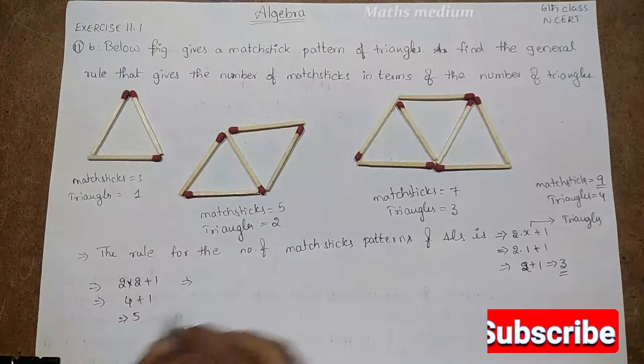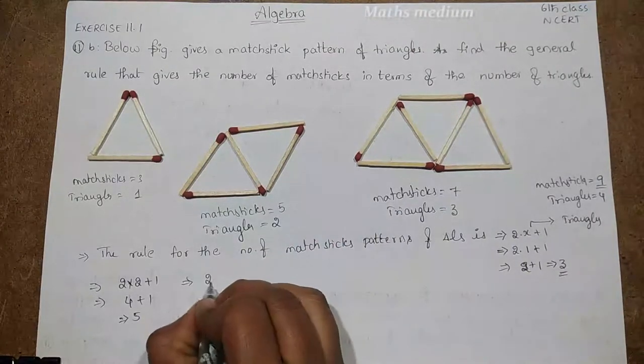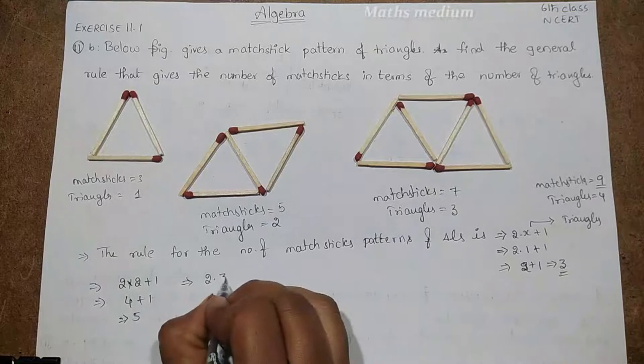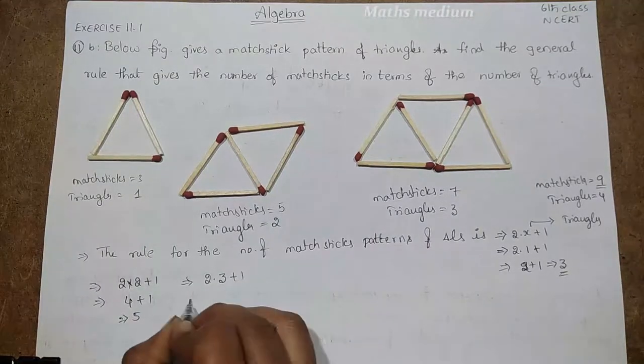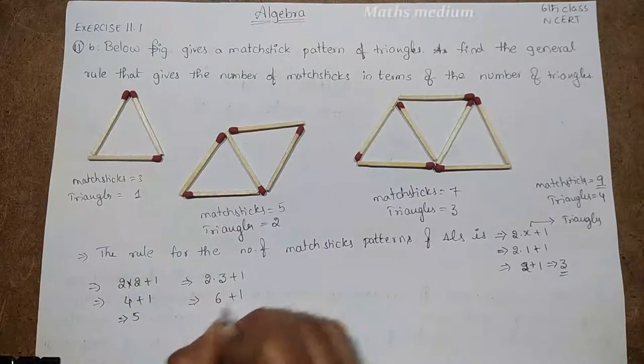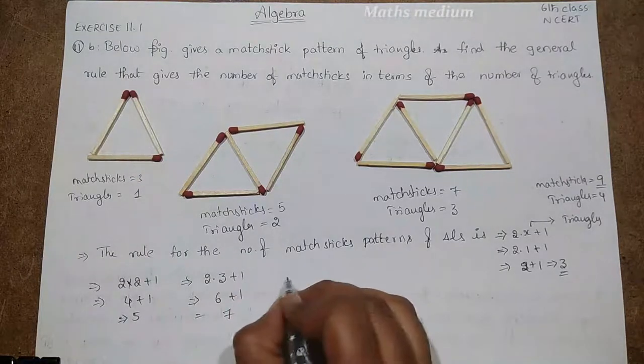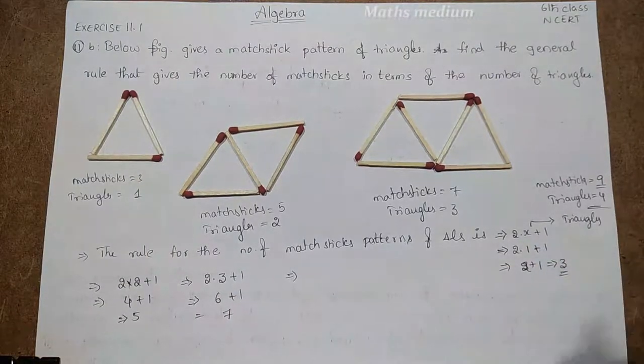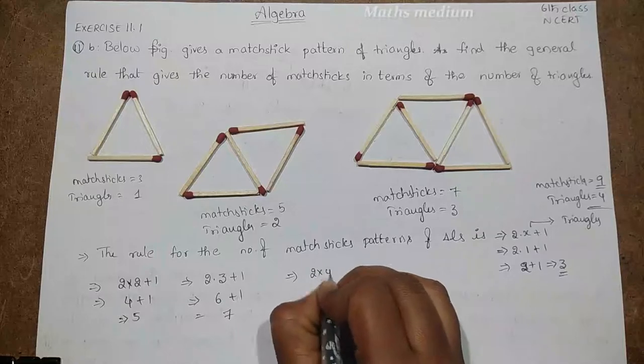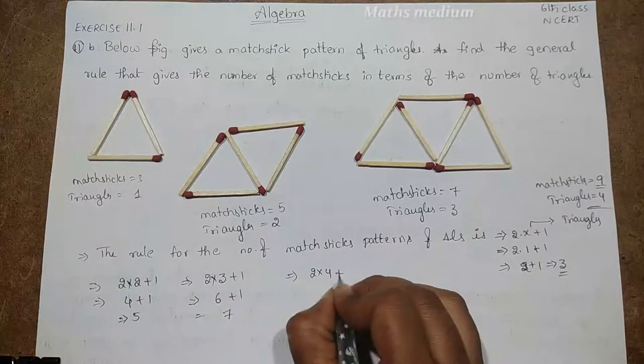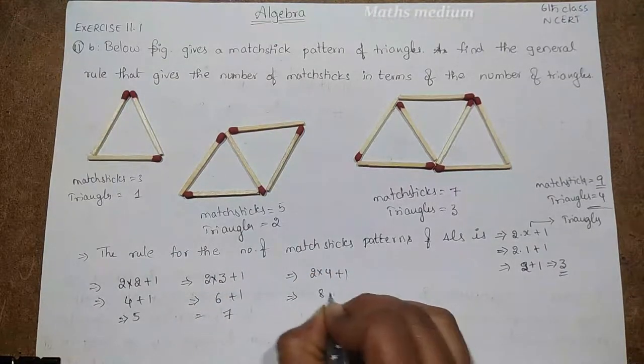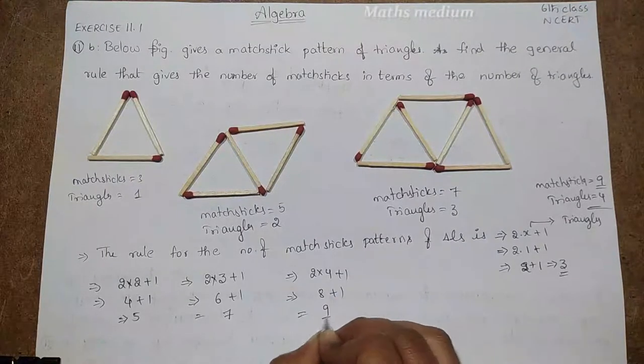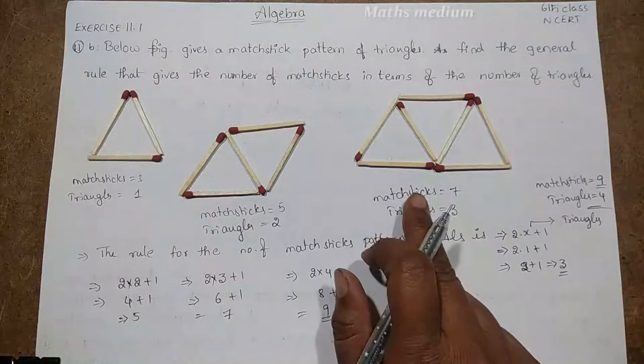So if in case 3 triangles, see 2 into 3 triangles, we need 4 plus 1. 2 into 4 plus 1, 2 times 4 is 8 plus 1. We need 9 matchsticks to get 4 triangles.